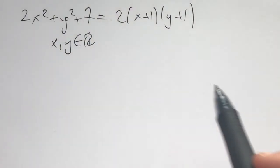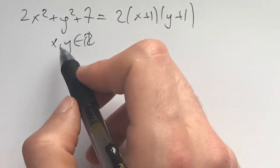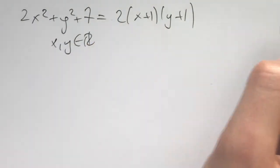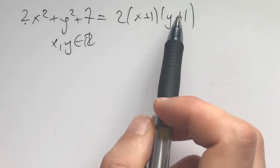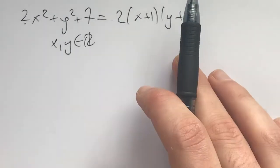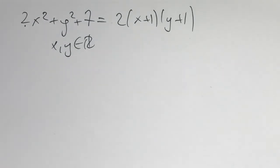The problem is asking us to find all pairs of real numbers x and y such that this equation holds true. With these types of problems we have one equation and two unknowns, so usually there's some side greater than or equal to another in almost all cases and that's how you find a solution.